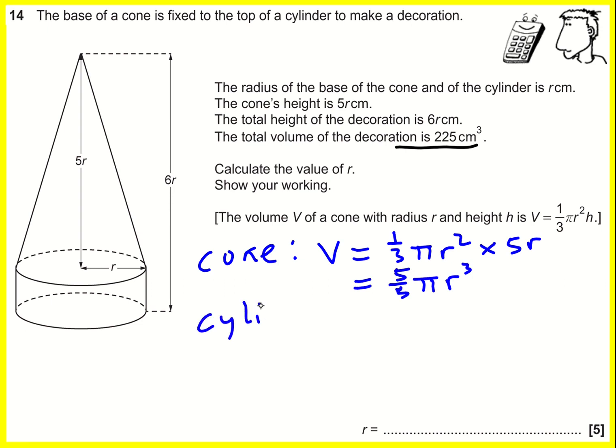Okay, cylinder. Here the volume is going to be the area of the circle, this cross-section, and then I'm going to multiply it by the height of the cylinder. Because the whole thing is 6r and the cone is 5r, then the height of the cylinder is going to be r, and I'm going to have π r³.